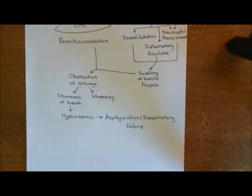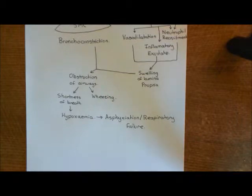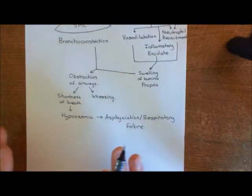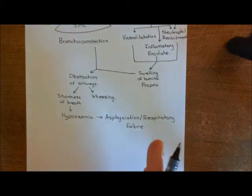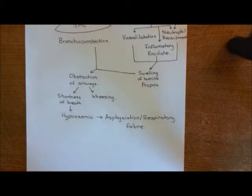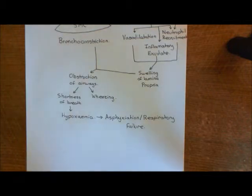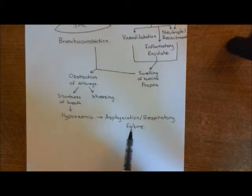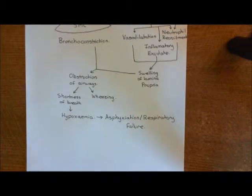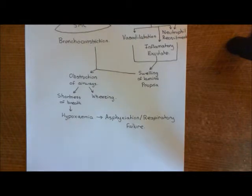Let's now discuss the late phase of the asthmatic attack — what happens more slowly. The immediate phase will sort itself out, usually even without treatment, as the mast cells run out of histamine, the smooth muscle cells relax back down, and the airways open up. However, there are many treatments available to try to open up the airways again and prevent asphyxiation. After the immediate phase comes the late phase, which is the phase where destruction of the bronchioles and the bronchi occurs.